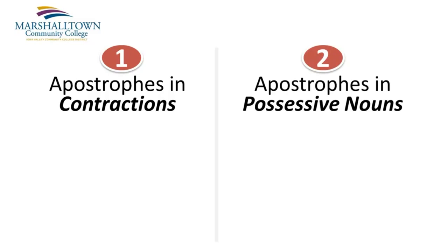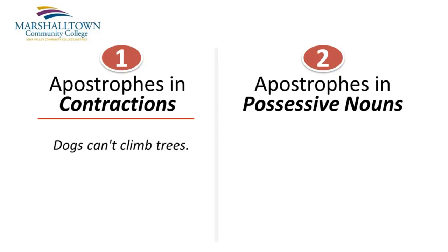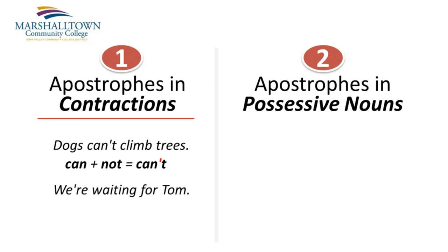For example, with contractions, an apostrophe takes the place of missing letters in a word. Dogs can't climb trees — can plus not equals can't. Or, we're waiting for Tom — we plus are equals we're.